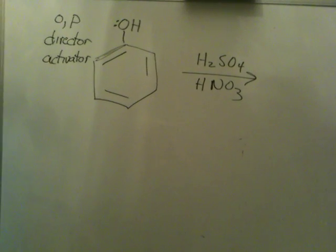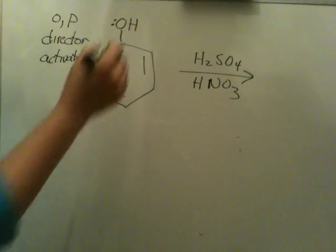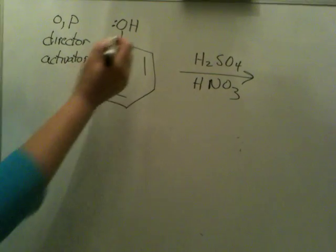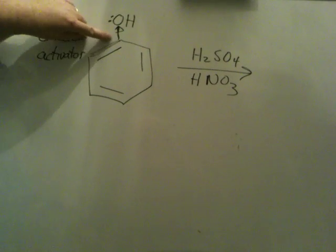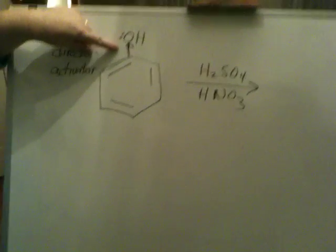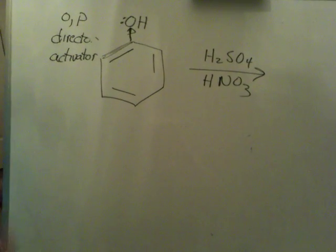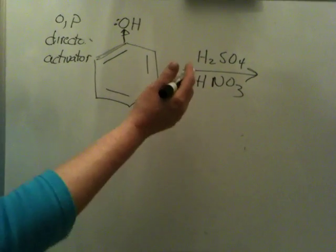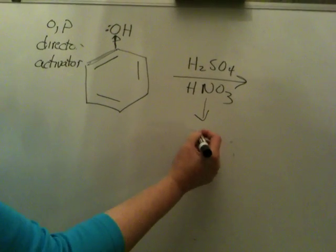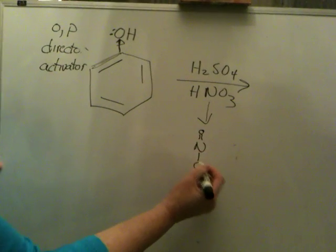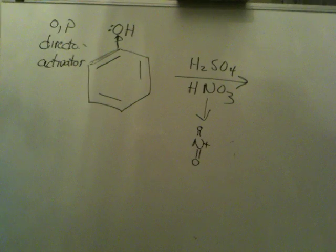Now we spoke in class that the reason this is so is because this has lone pairs adjacent to the ring, even though this group is electronegative and it's pulling electron density through the sigma bond. It's actually pushing electron density through the pi system and we want to show that. This is nitration and what these reagents generate is NO2+.